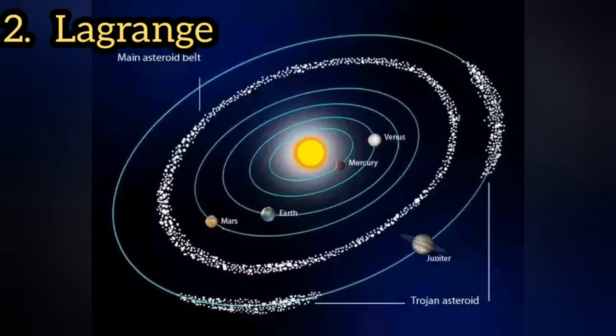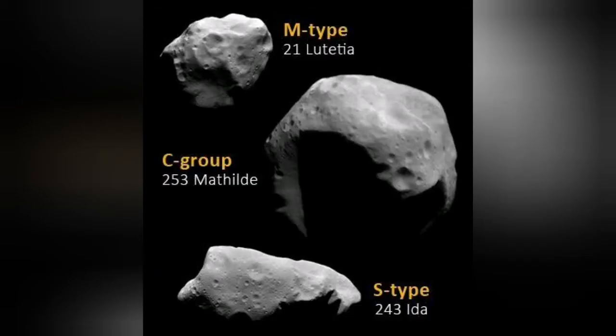Then we have the Lagrange asteroids. These are asteroids which go around the sun in the same orbit as Jupiter. Some are in front of Jupiter and some are behind Jupiter. They are known as Trojan asteroids, or sometimes called fake asteroids.